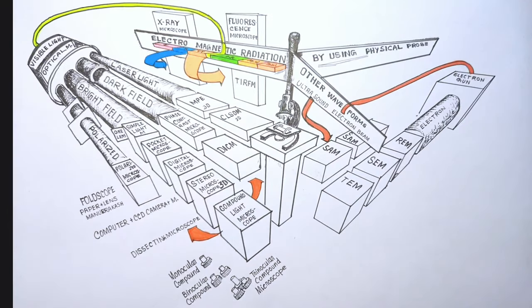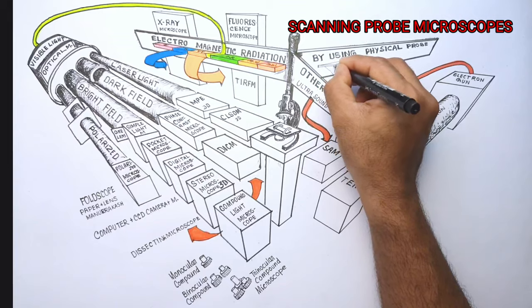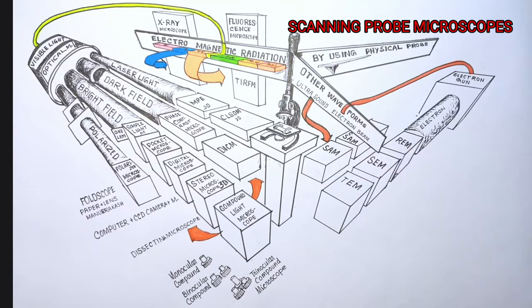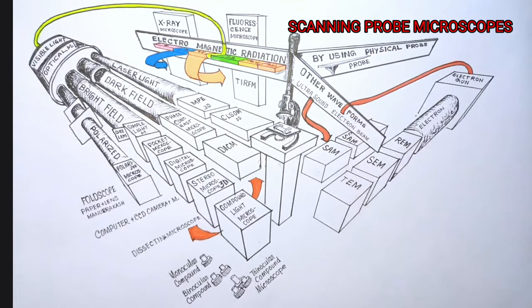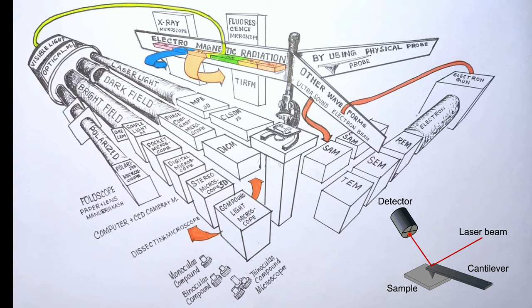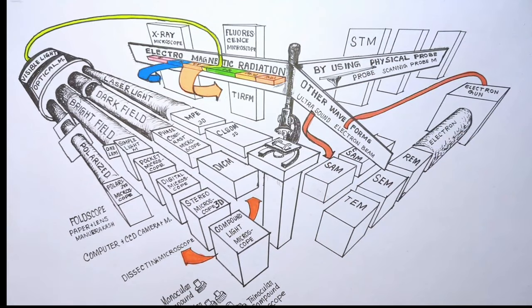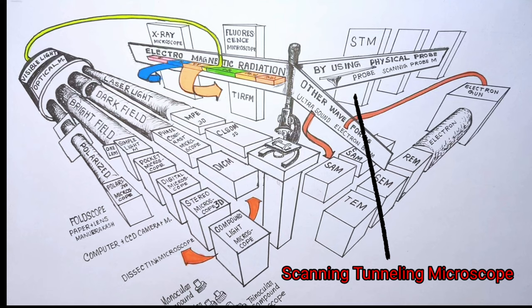Now, let's move to the third category of microscopes, the scanning probes or SPMs, where physical probes are used to scan the surface at the nanoscale level. The probe tip is mounted on a flexible cantilever allowing the tip to follow the object surface and an electrical potential difference is applied between the tip of the probe and the sample. The first type of scanning probe microscope or SPM is the scanning tunneling microscope or STM. STM measures the electrical current between the tip of the probe and the specimen.